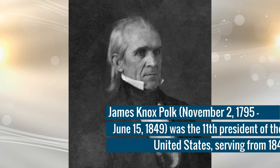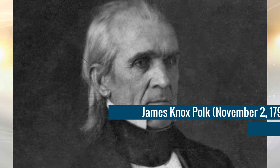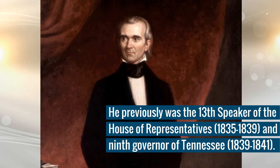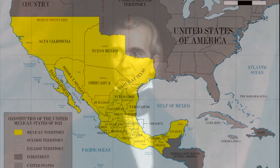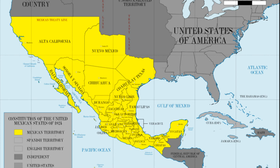Number 9: James K. Polk. James Knox Polk was the 11th president of the United States, serving from 1845 to 1849. He previously was the 13th Speaker of the House of Representatives from 1835 to 1839 and the 9th governor of Tennessee from 1839 to 1841. Polk is chiefly known for extending the territory of the United States through the Mexican-American War.